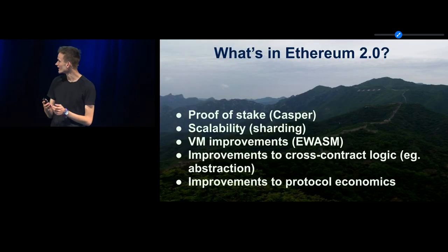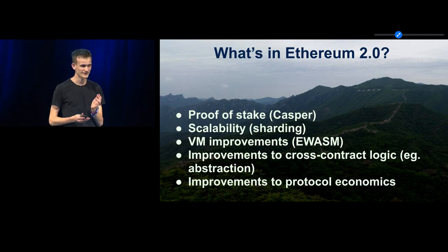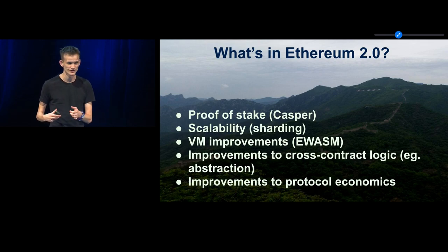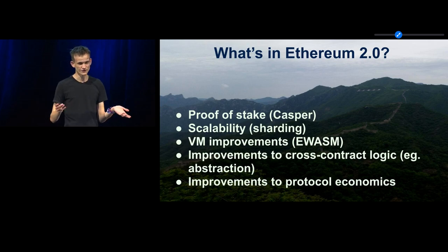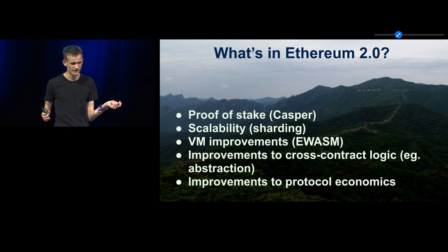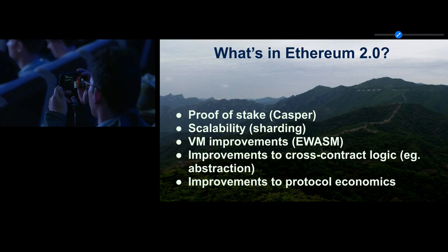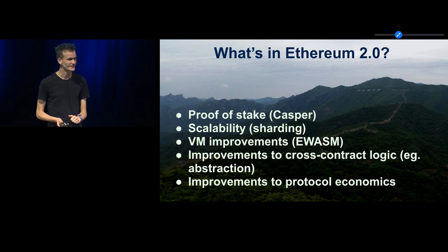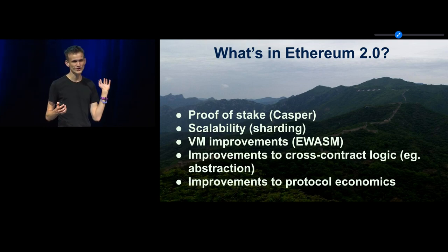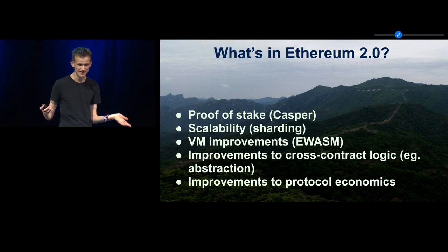Today I'm going to talk about Ethereum 2.0, not just from a technical point of view, but more from the point of view of why Ethereum 2.0, what is Ethereum 2.0, and how we got here. Ethereum 2.0 is a combination of a bunch of different features we've been talking about and researching for several years, that are finally going to come together into one coherent whole. These features include proof-of-stake, Casper, scalability, sharding, virtual machine improvements, eWASM, improvements to cross-channel contract logic, improvements to protocol economics, and really the list goes on and on.